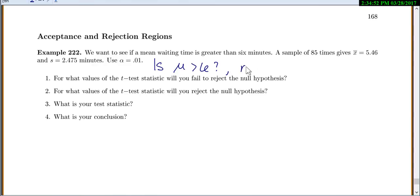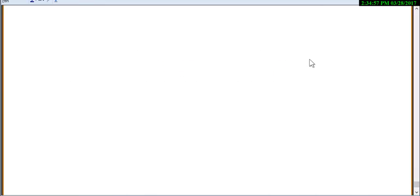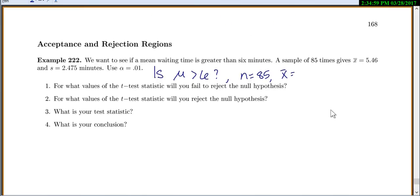We have a sample of 85. X bar equals 5.46. S equals 2.475. And they say use alpha equals 0.01. So when we do problems like these, if we're looking at the acceptance and rejection regions, before we even calculate our test statistic, we can find our acceptance and rejection regions. So number one, for what values would you fail to reject the null? Number two, for what values would you reject the null?